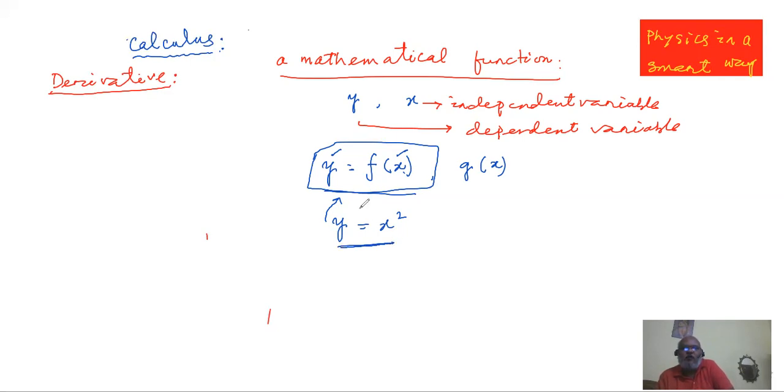That is an example of mathematical function where Y is a dependent variable and X is an independent variable. We have put it in so many ways: Y = X² or X³ + sin(x) + something times X. You know here also the same thing is valid. X is independent, but when the value of X changes, then the value of Y changes.